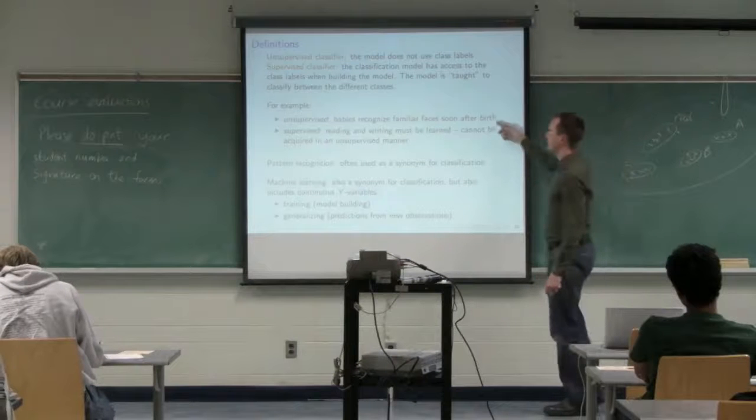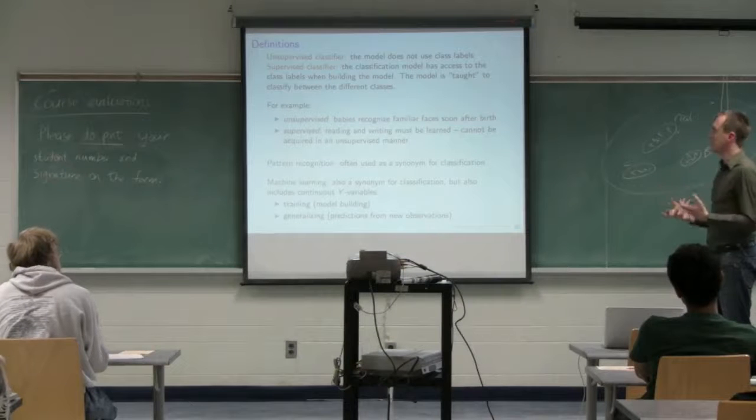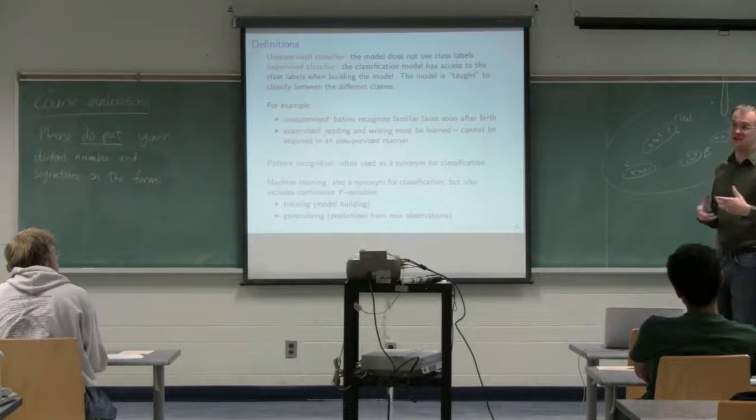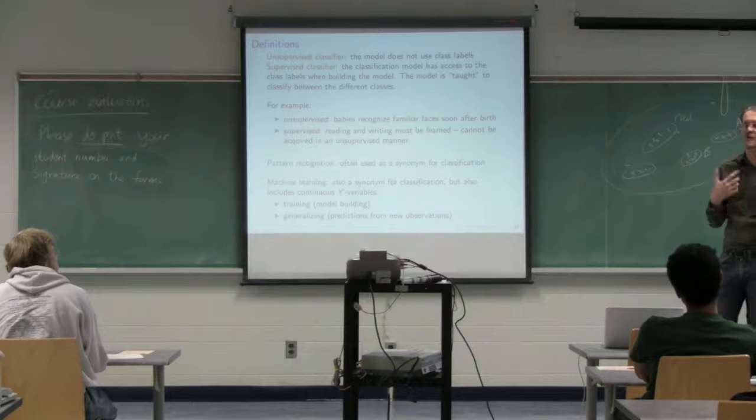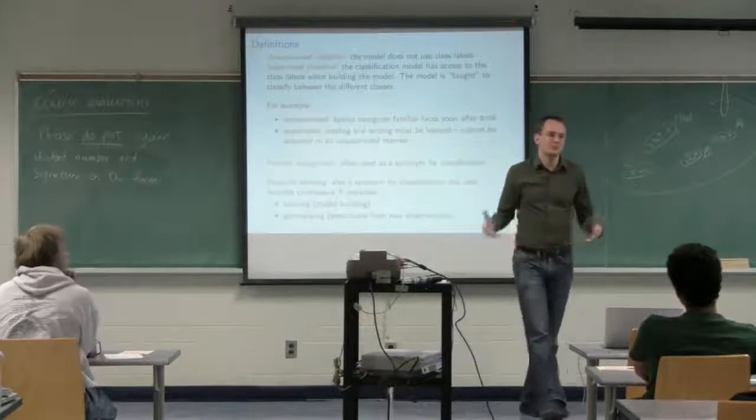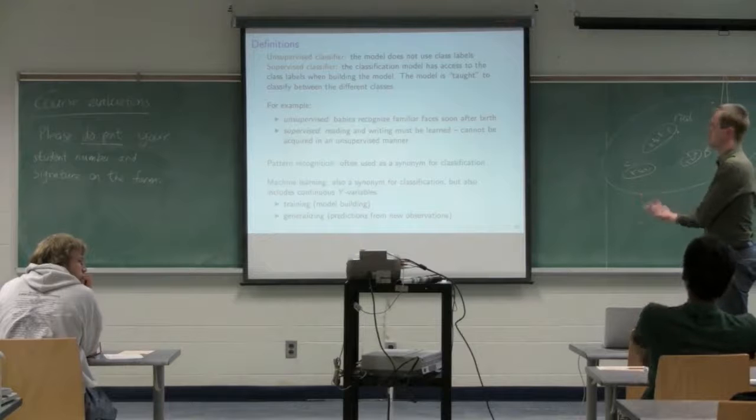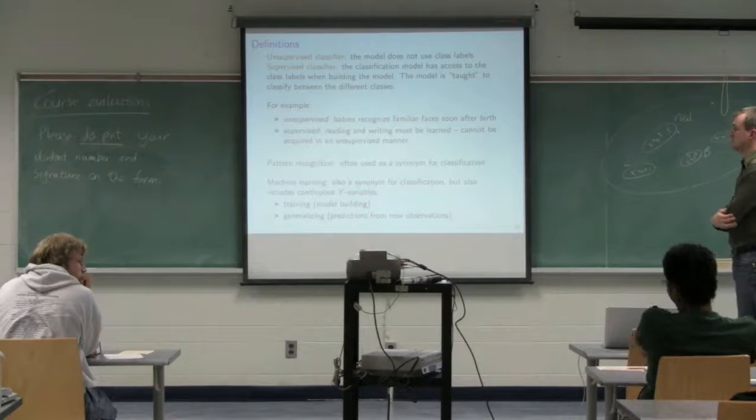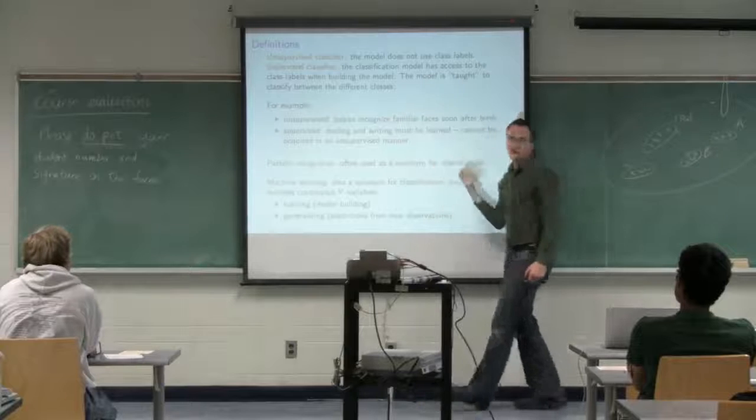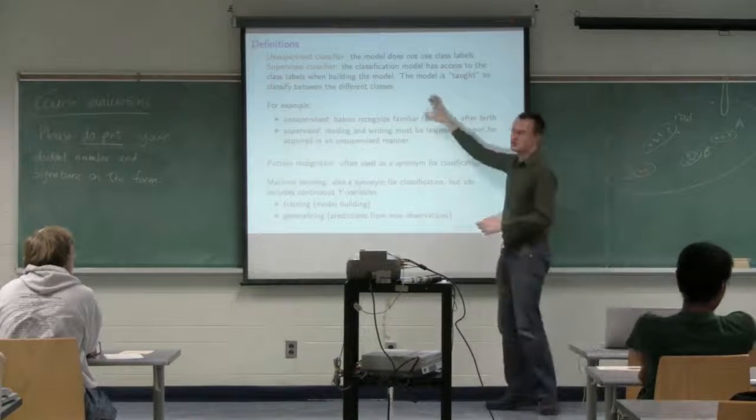We can use the terminology that we teach the model how to classify. If you want an example, babies will learn faces from birth without being told. Nothing's telling the child who's who and who's familiar or not. They kind of just learn that. That's a whole separate field of study for this idea of how the brain learns. It's really interesting how it does that in an unsupervised manner. But certain things cannot be taught, cannot be relied on to just naturally come. Reading and writing are things that must be learned, and you're taught that by a teacher.